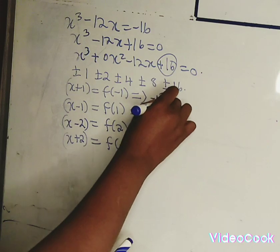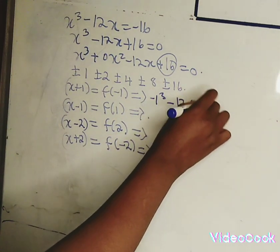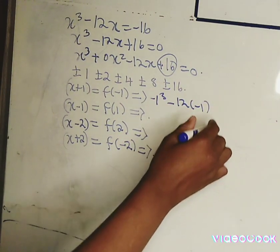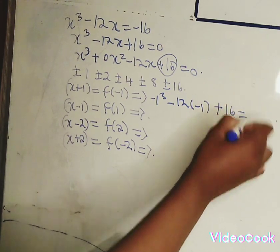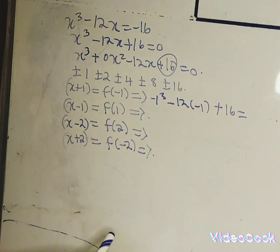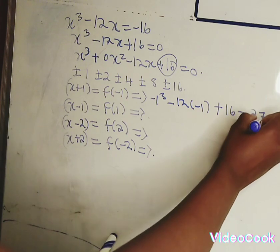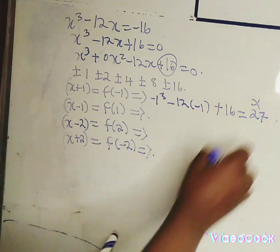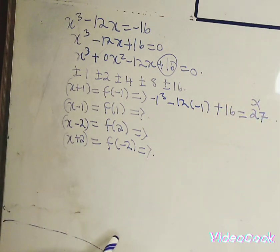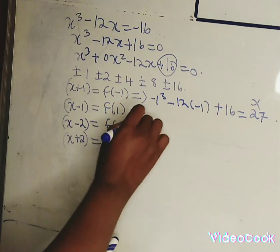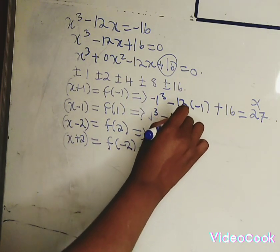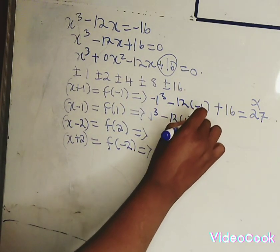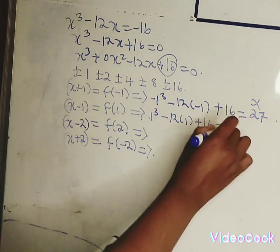Let's inject minus 1 into our equation: minus 1 cubed minus 12 times negative 1 plus 16. When we substitute negative 1, we get positive 27, which disqualifies x plus 1 as a factor.